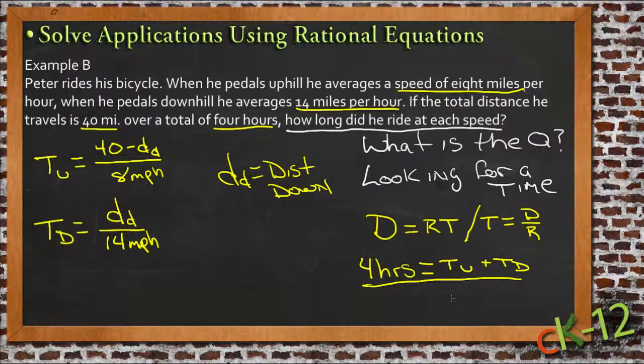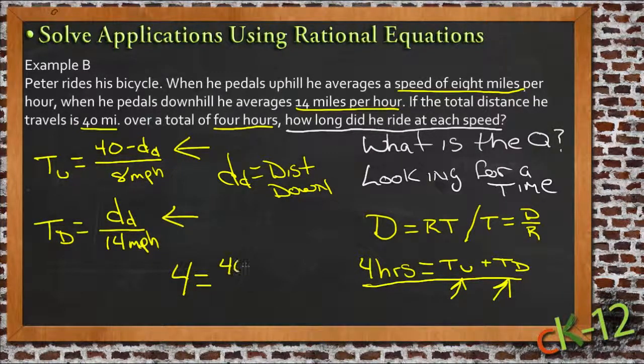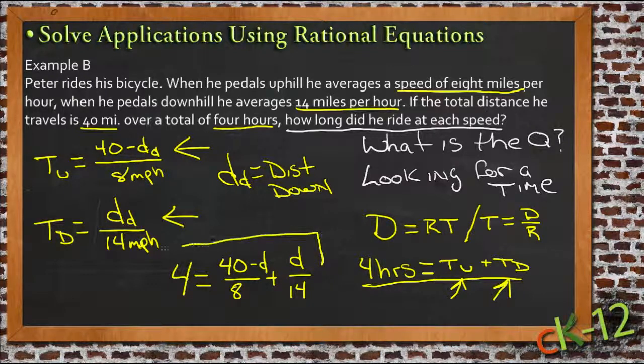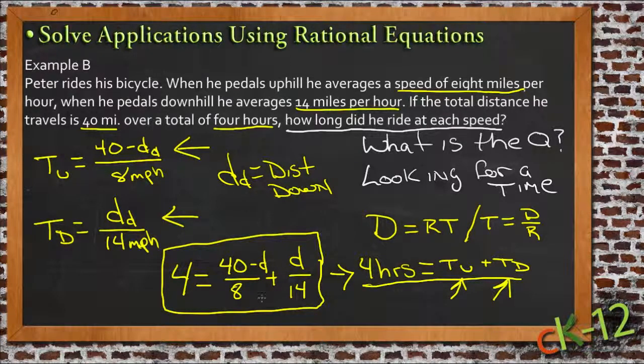But if we rewrite time up and time down using the same variable like we've done, we can write this equation: 4 hours equals 40 minus D over 8 plus D over 14. This is the same equation as before, but using that new information. This can be solved because it only has a single variable.